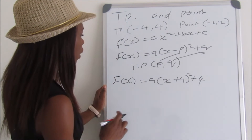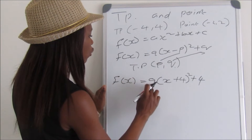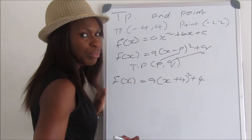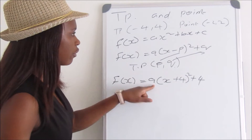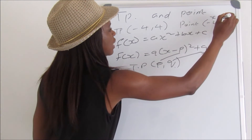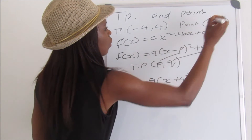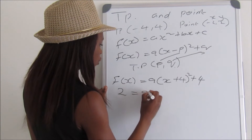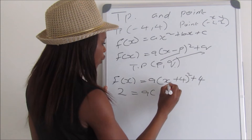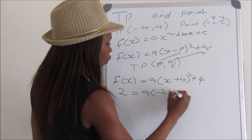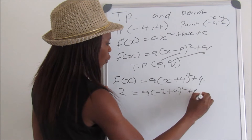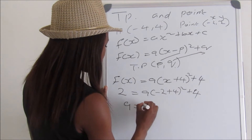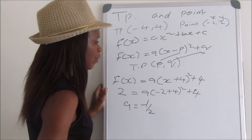We still have the unknown 'a', so we use the other point on the graph where x = -2 and y = 2. Substituting: 2 = a(-2 + 4)² + 4, which gives us a = -1/2.